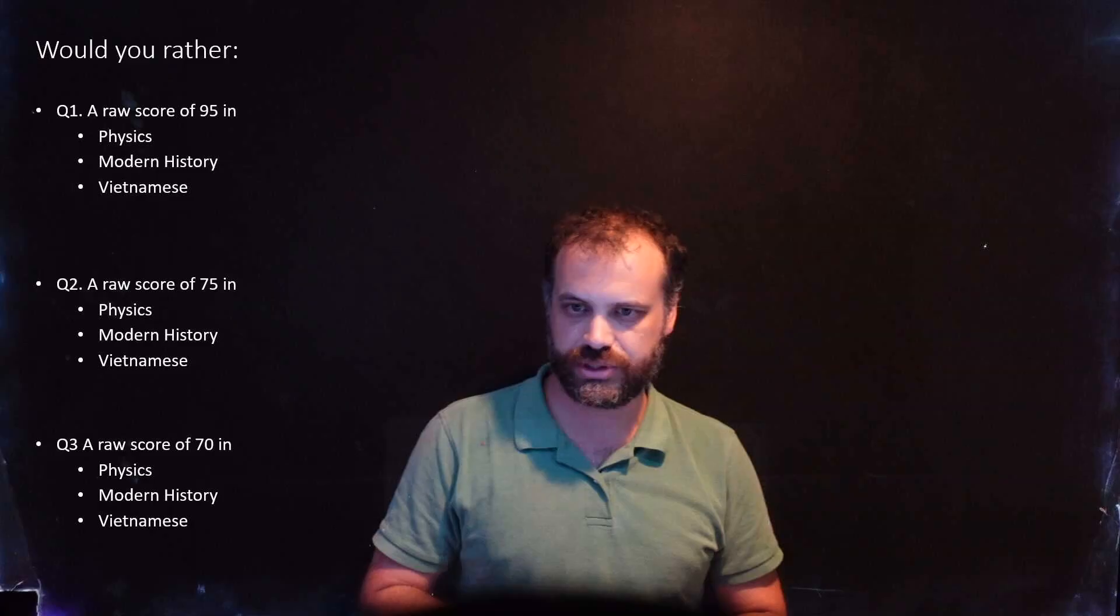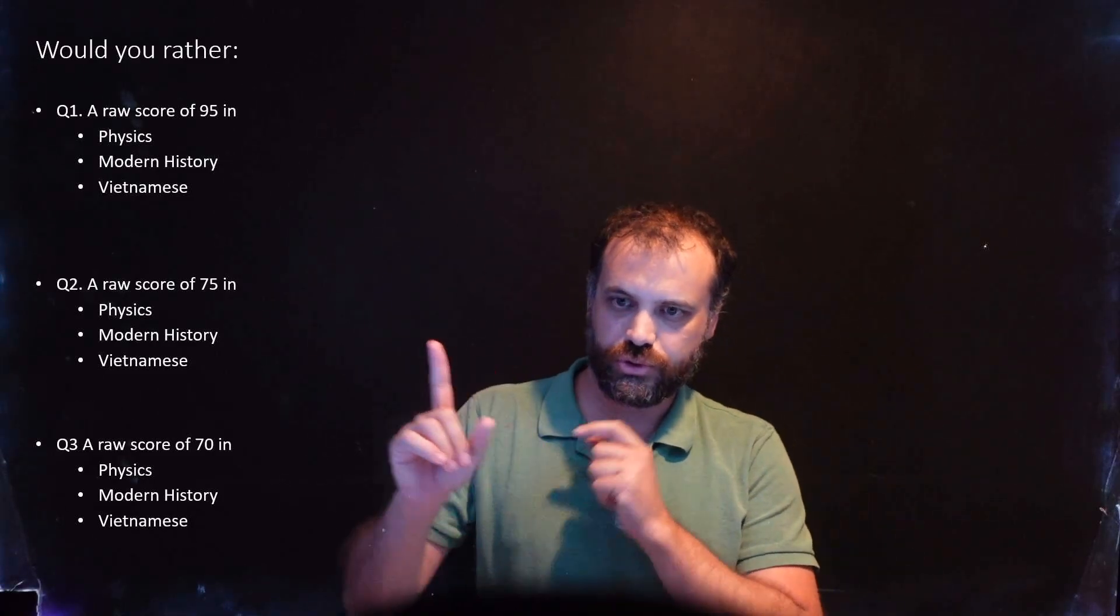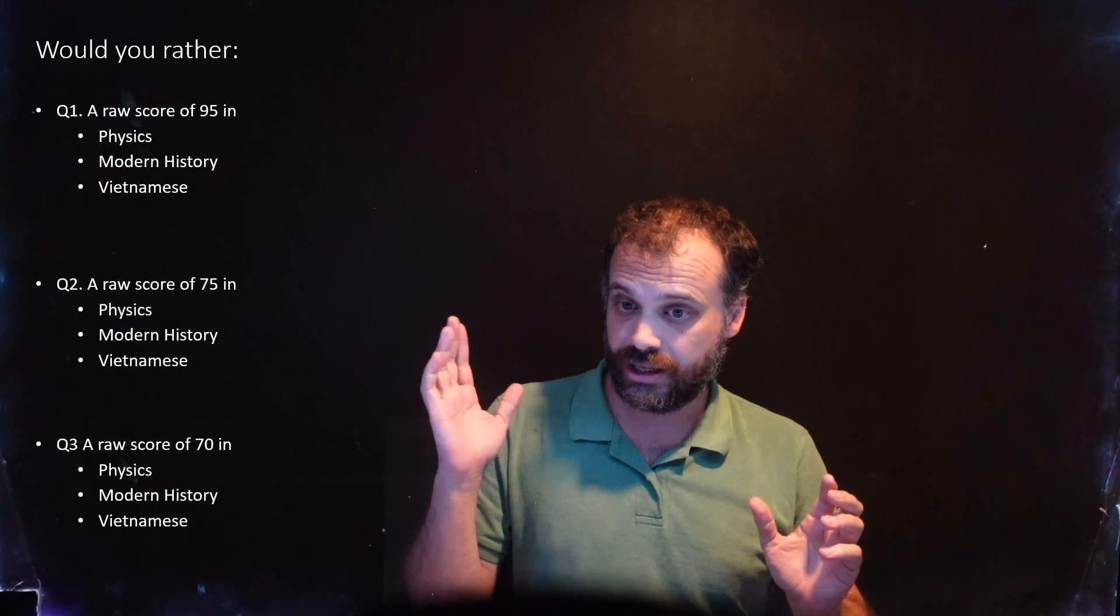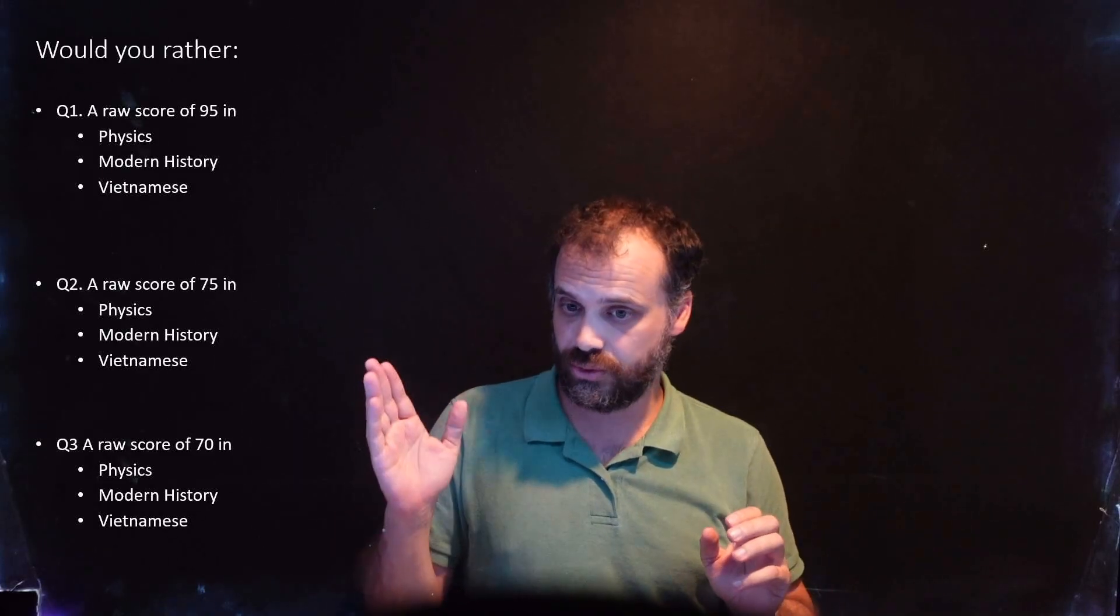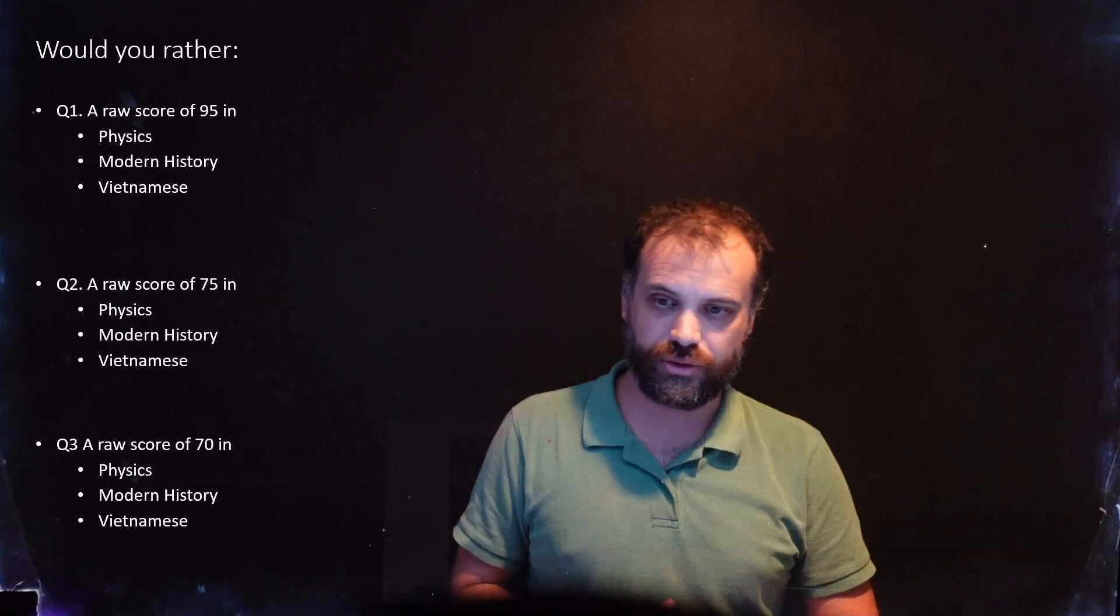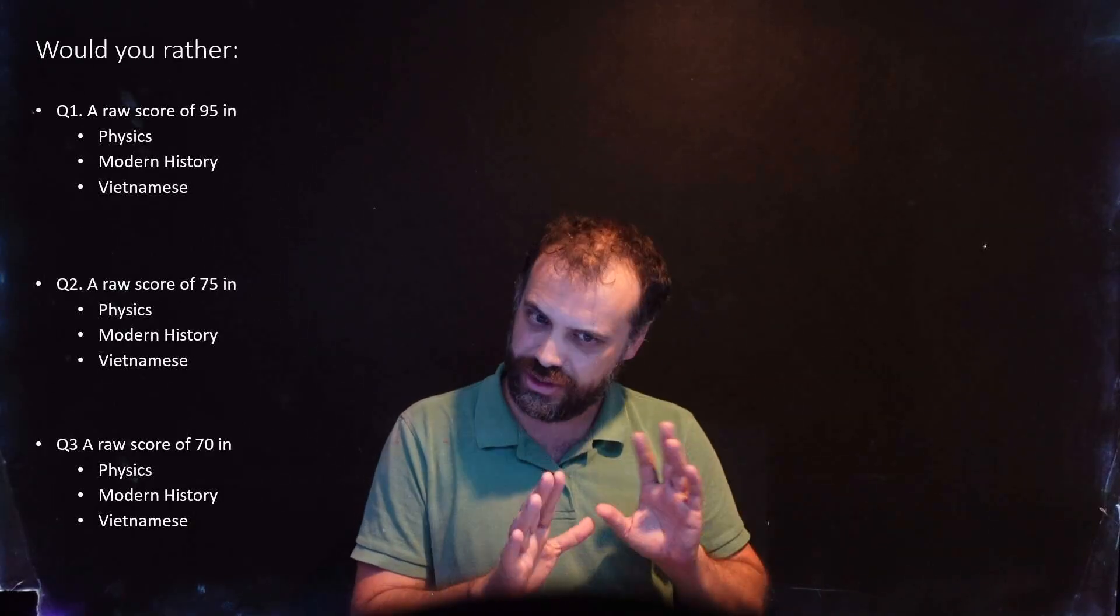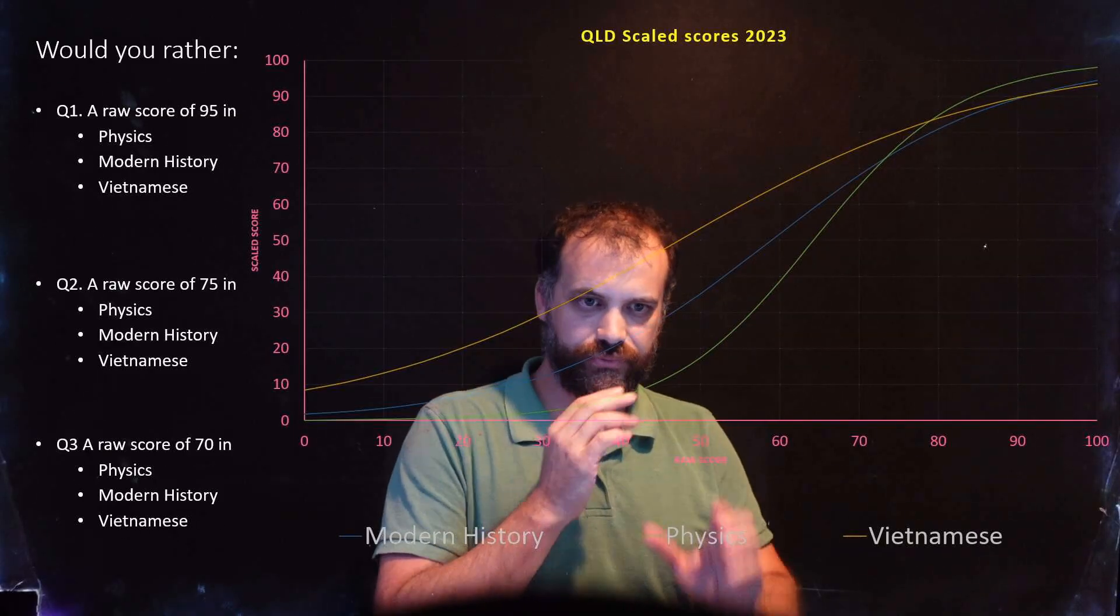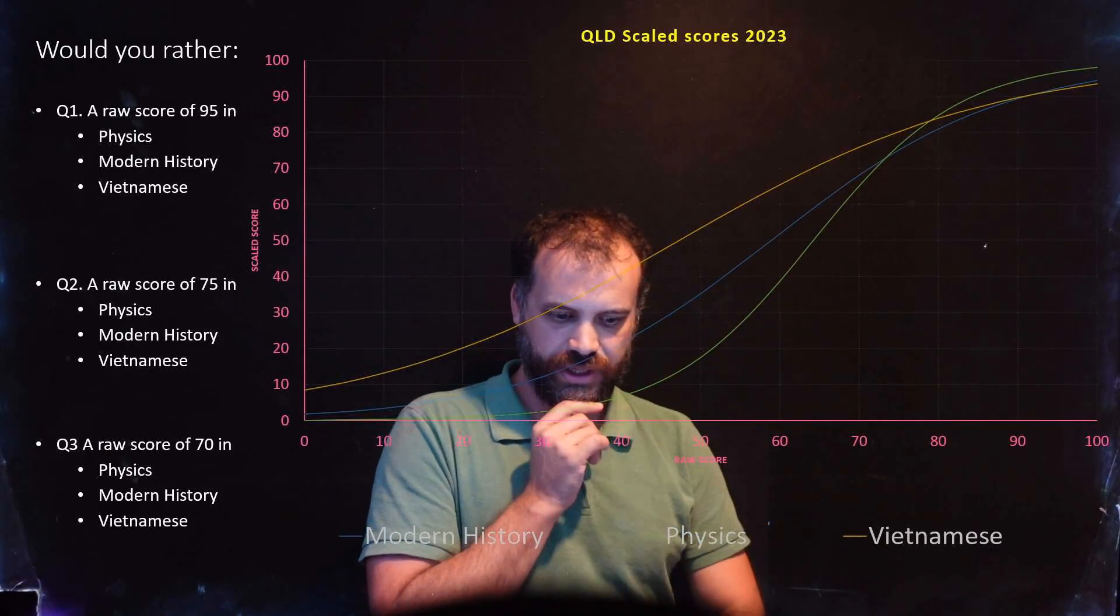Here's round two with three more subjects. We have a raw score of 95 in physics, modern history, or Vietnamese. 75 in those subjects, or 70 in those subjects. I think you get the sense of where we're going with this. Let's take a look at our graph. Here we are.